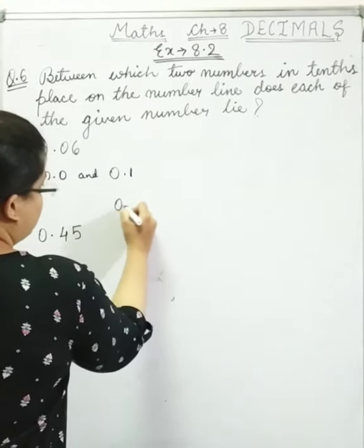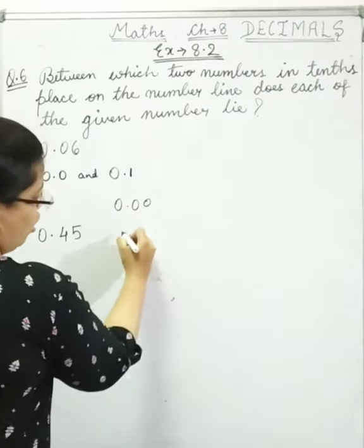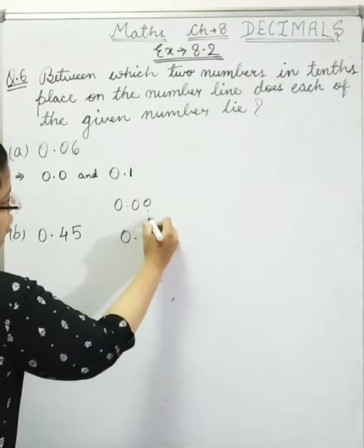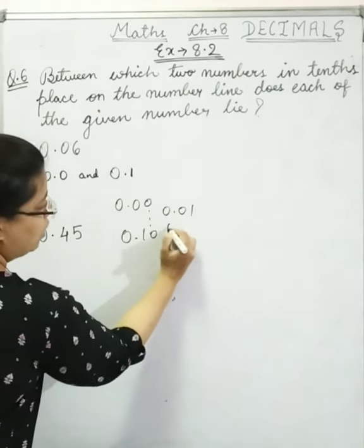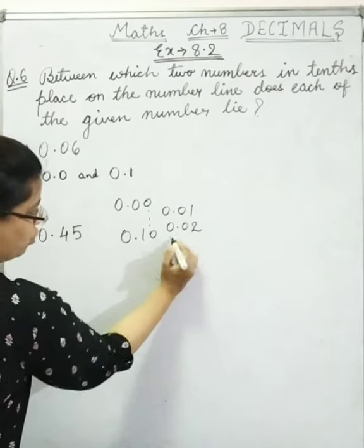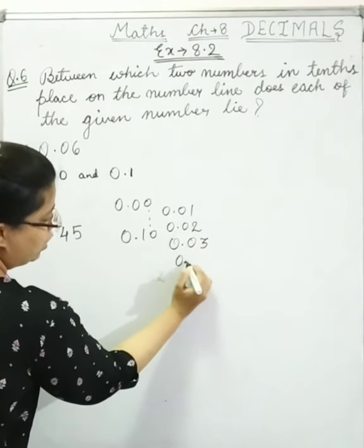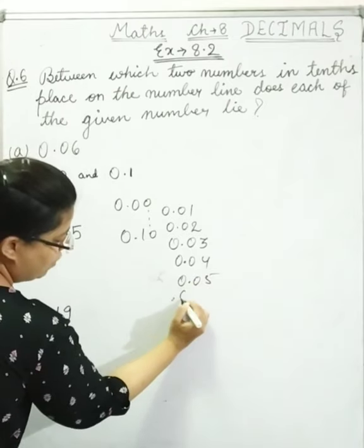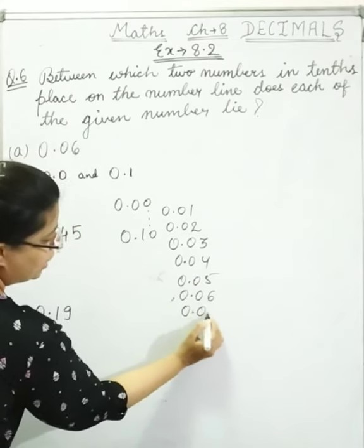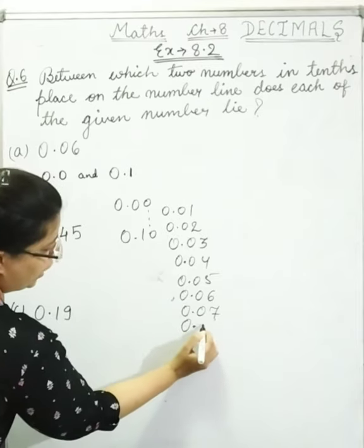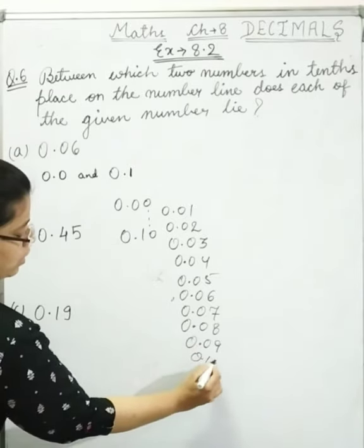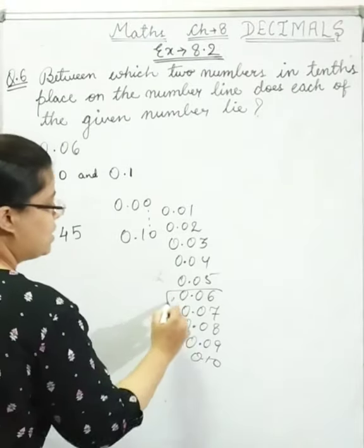If we write this as 0.00 and 0.10, then the decimals in between are: 0.01, 0.02, 0.03, 0.04, 0.05, 0.06, 0.07, 0.08, 0.09, and then 0.10. So 0.06 lies between 0.0 and 0.1.